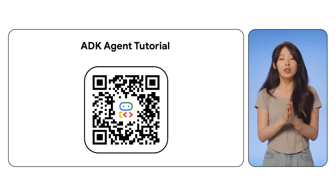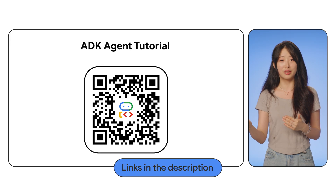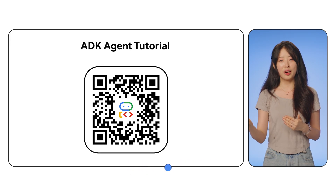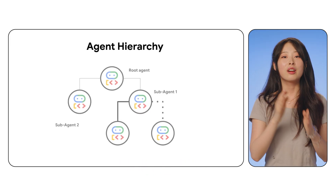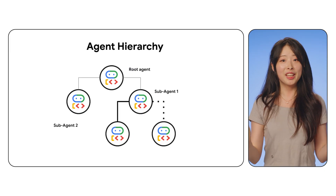If you want to try those agents, check out the links and QR code on the screen to try them yourself. The third part of today's episode is about agent hierarchy.